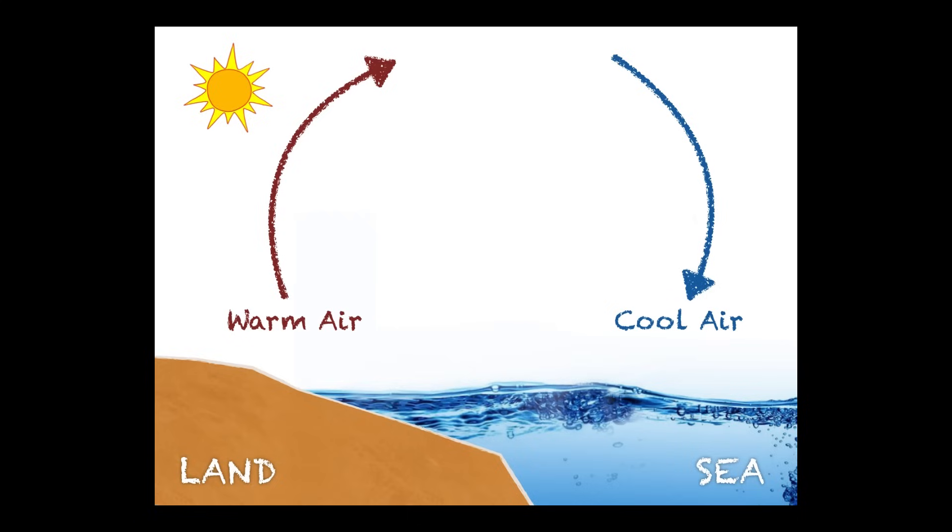Since warm air is leaving the area over the land that would create less pressure on the land. You see how the arrow is going away from the land, that would take air particles away. Therefore there'd be less pressure pushing down on the land. But if you look over on the right hand side where the cool air is, cool air is sinking and that arrow is drawing air particles down and pushing on the sea.